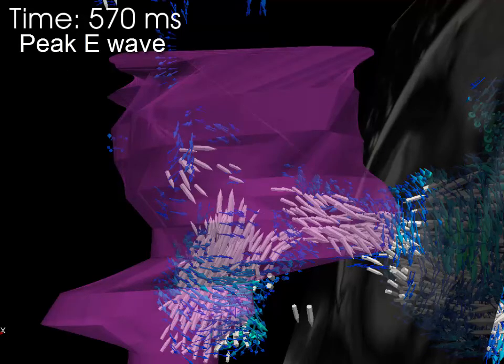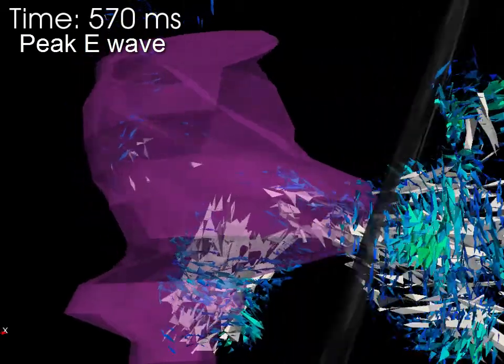During the first part of diastole, E-wave, there is little vorticity in the atrium.